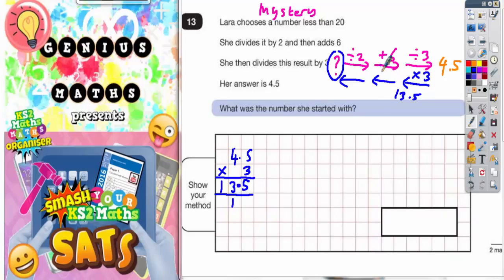Next job we need to do the opposite of add 6, which is subtract 6. So 13.5 subtract 6. Well 13 take away 6 would be 7. So 13 take away 6 is 7. 13.5, which is 0.5 more than 13, take away the 6 is going to be 0.5 more than 7. So 13.5 take away 6 is 7.5. So so far we're on 7.5.